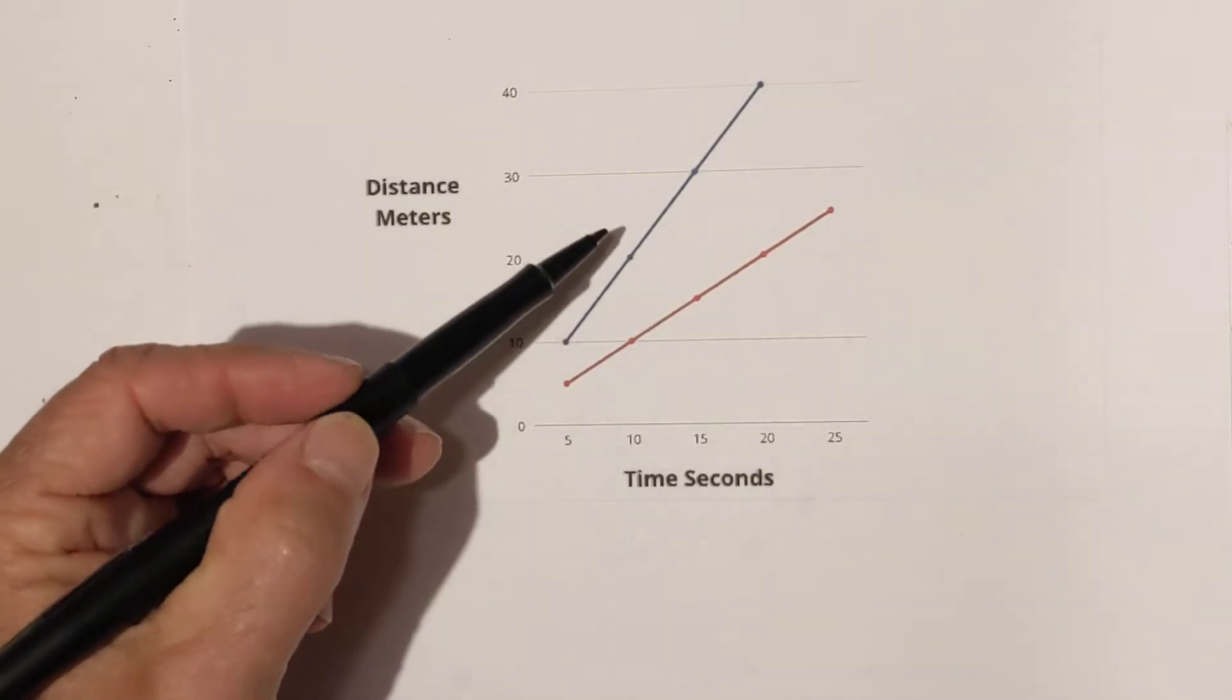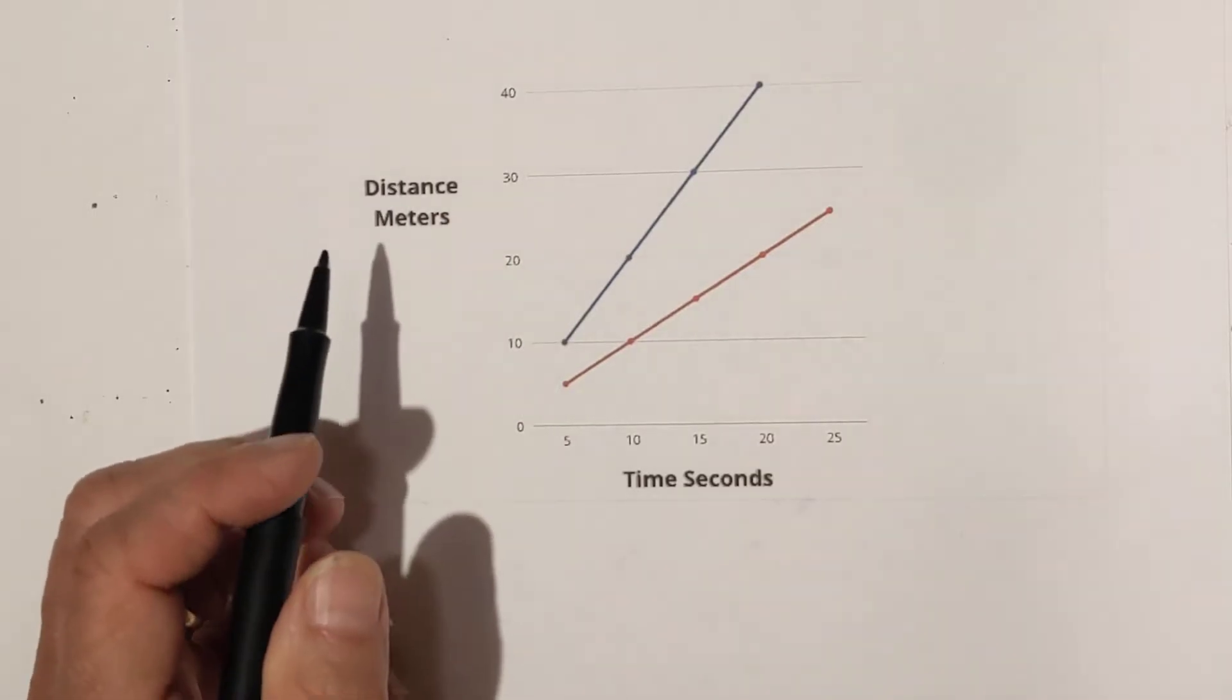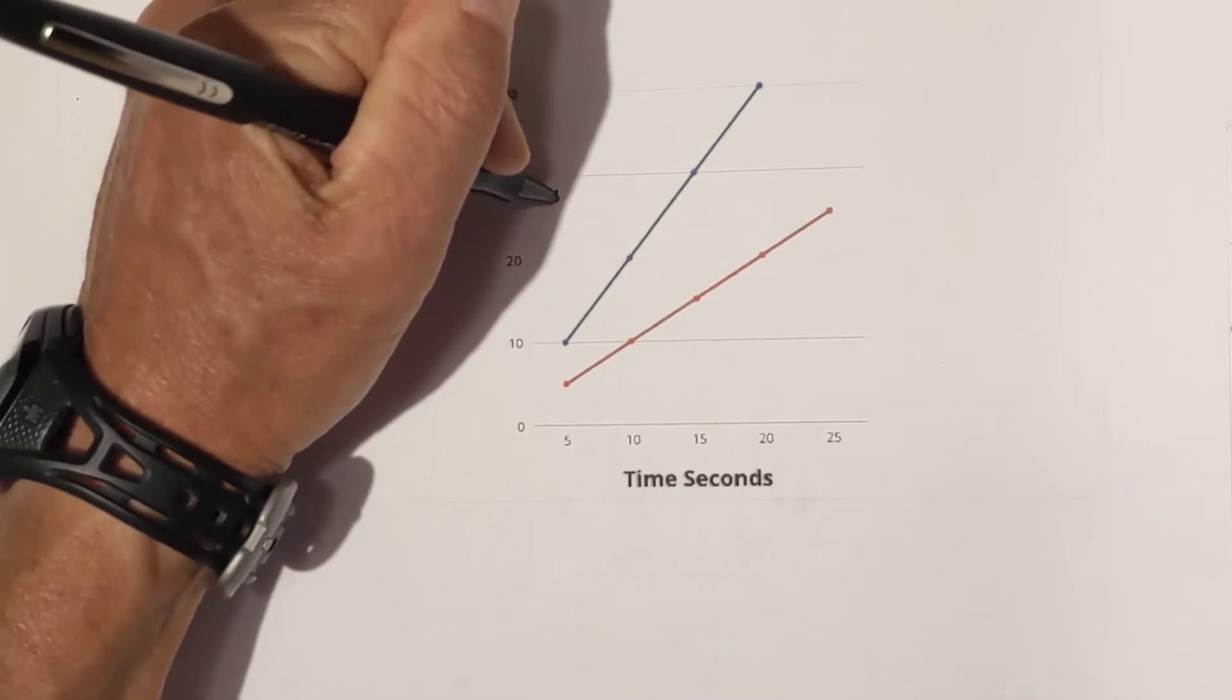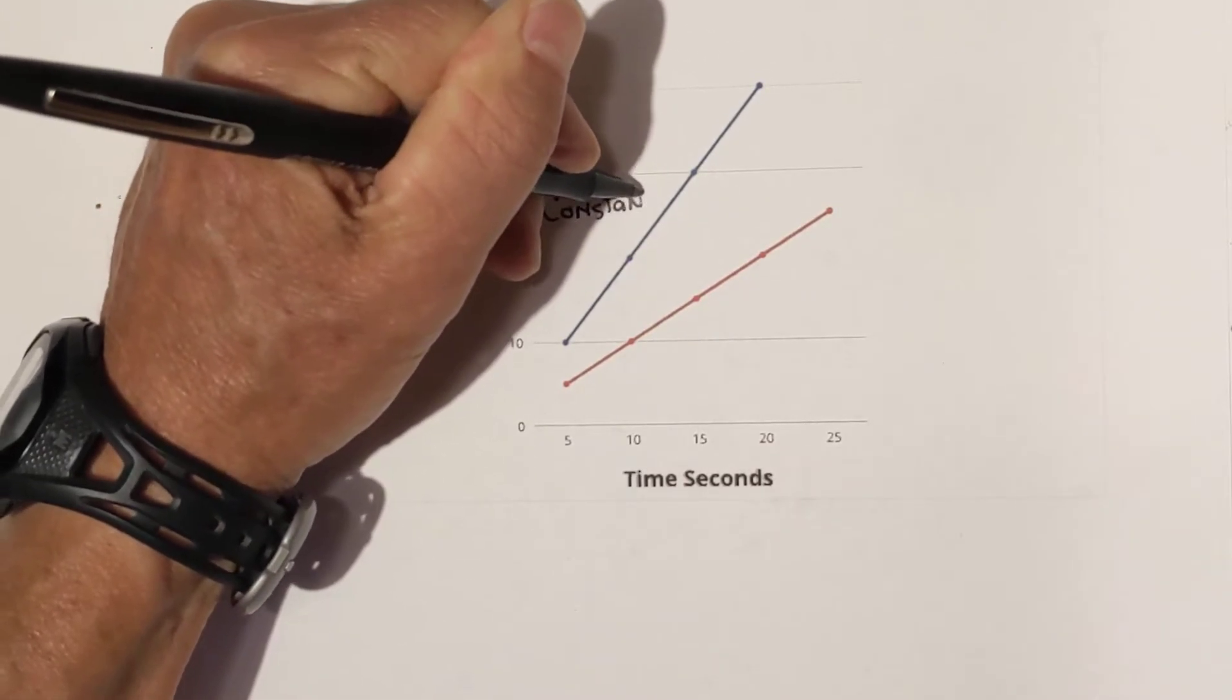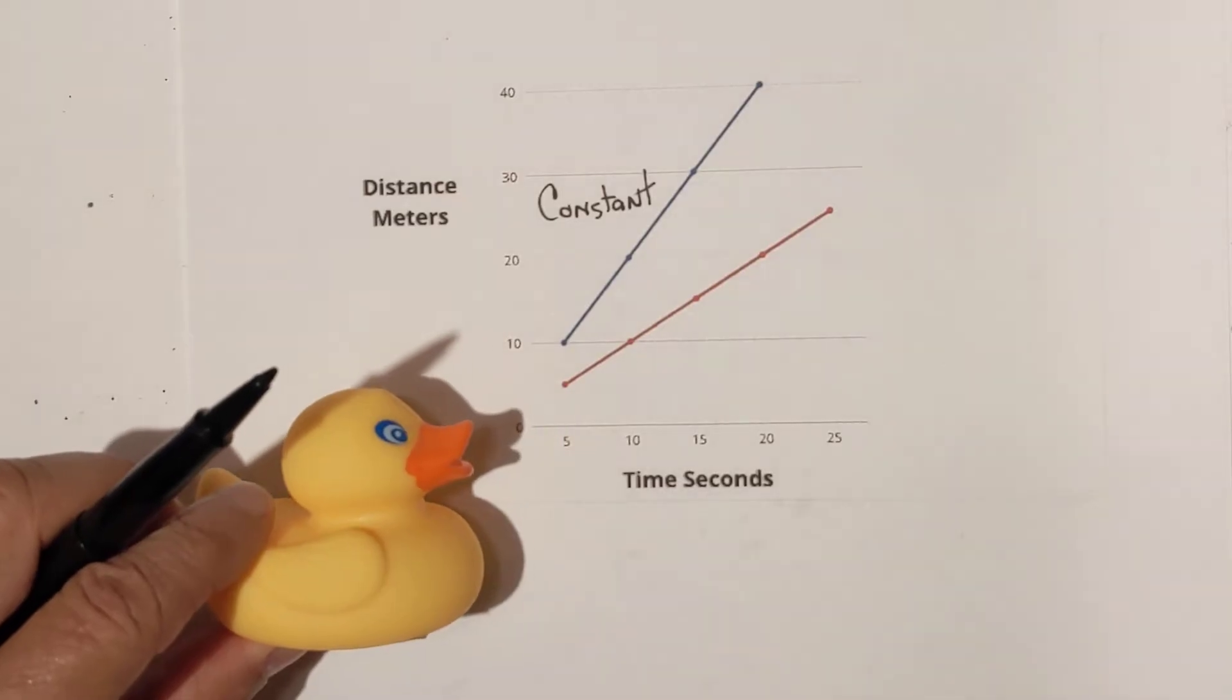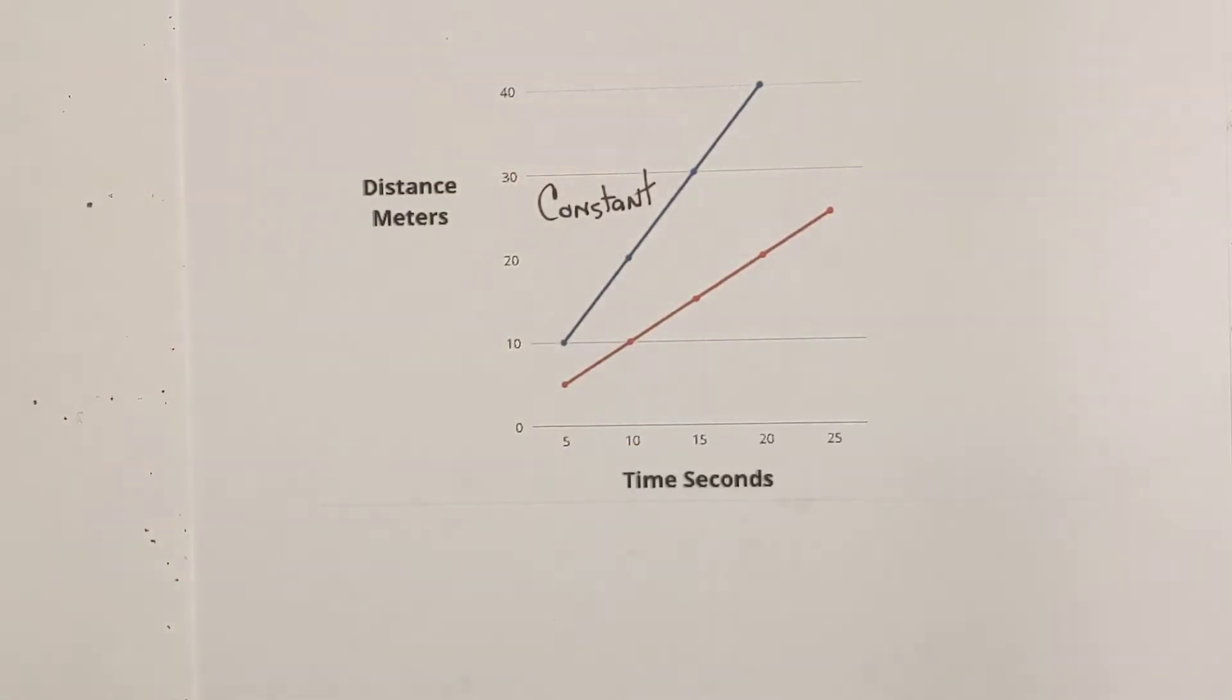First, you may see something like this. You have two lines, the blue and the red, and what are they telling you? Whenever you have a straight line like this, that means that the movement is constant. There's no acceleration or deceleration if you have the little rubber ducky here. It's constant like this.